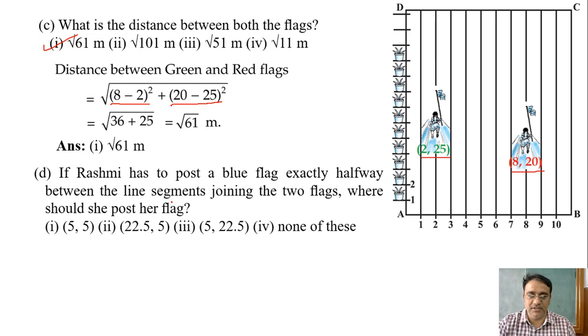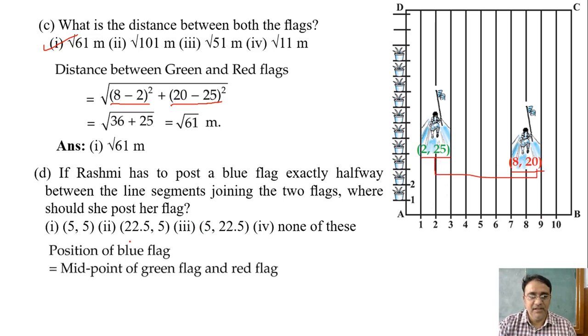Now we will see the next question. If Rashmi has to post a blue flag exactly halfway between the line segment joining the two flags, where should she post her flag? So we will find the midpoint of these two points. Midpoint of green and the red flag. How will you find the midpoint formula? Midpoint of two coordinates: X1 plus X2 by 2, Y1 plus Y2 by 2.